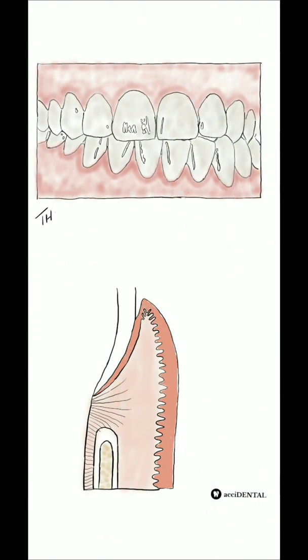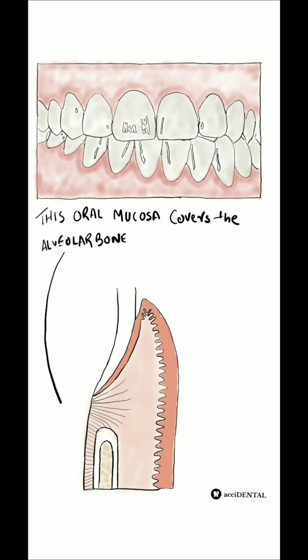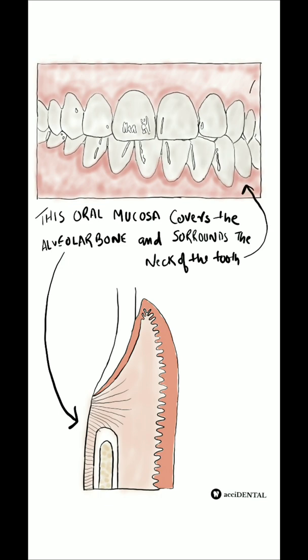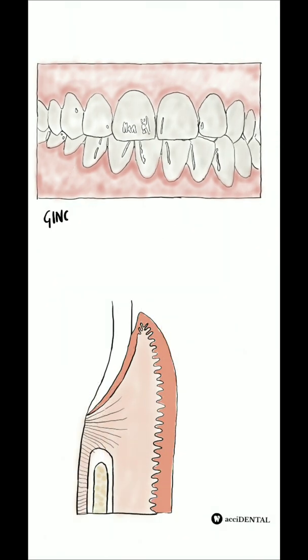Welcome to our channel Accidental. Today we will be studying about the topic Gingiva, which is one of the components of the periodontium. In layman's terms we call it gums. Gingiva is an oral mucosa that covers the alveolar bone and surrounds the neck of the teeth, and extends from the dento-gingival junction to the alveolar mucosa.